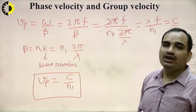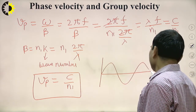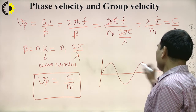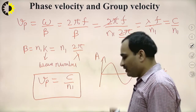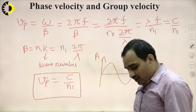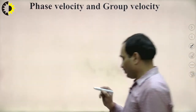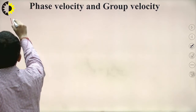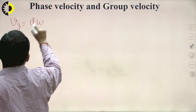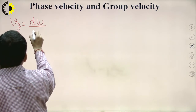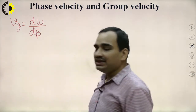This is the phase velocity of a wave varying with time having some amplitude a. Now let us discuss what is the group velocity of a wave. Group velocity Vg is nothing but the differential change in the angular frequency divided by the phase constant, that is d omega by d beta.